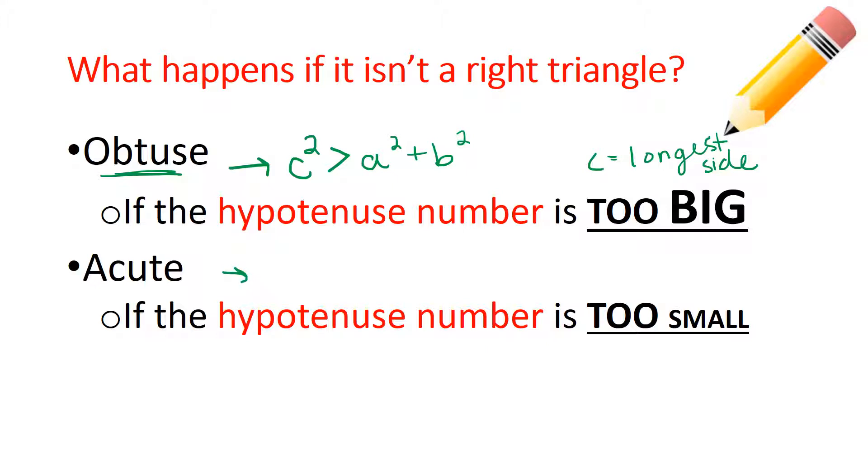On the other hand, acute would mean C squared is less than A squared plus B squared. So then when I have an acute triangle, that C squared value has to be smaller than the other two combined. So then if we wanted to jot this down just from the last slide...